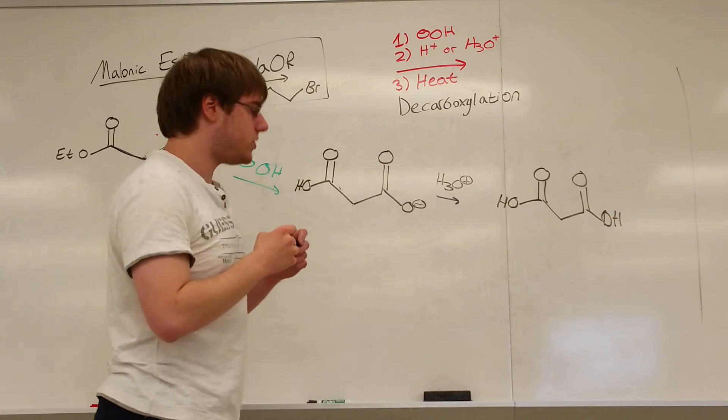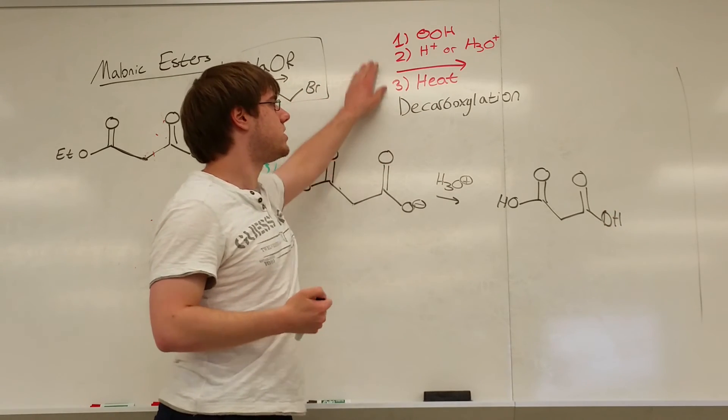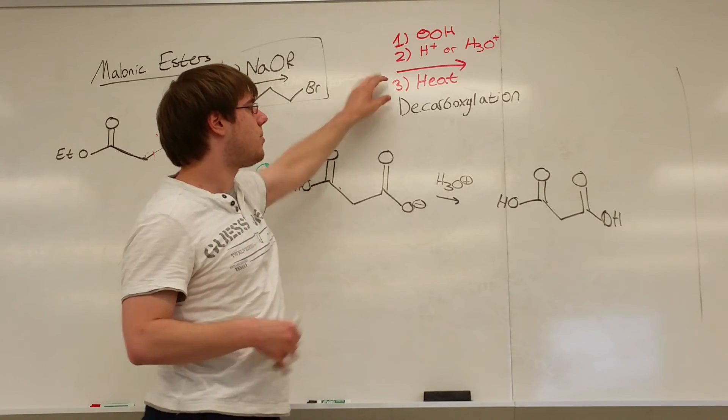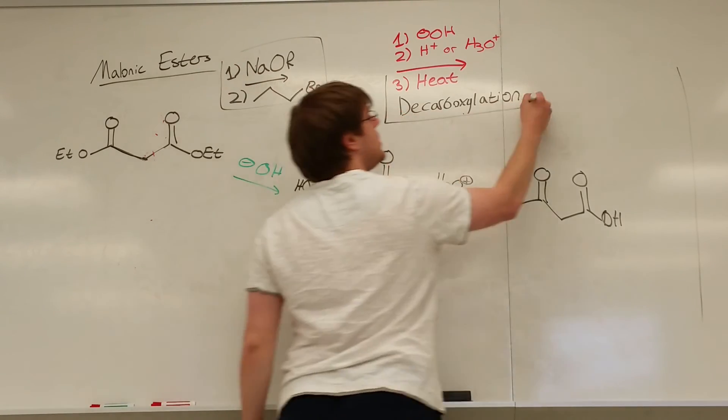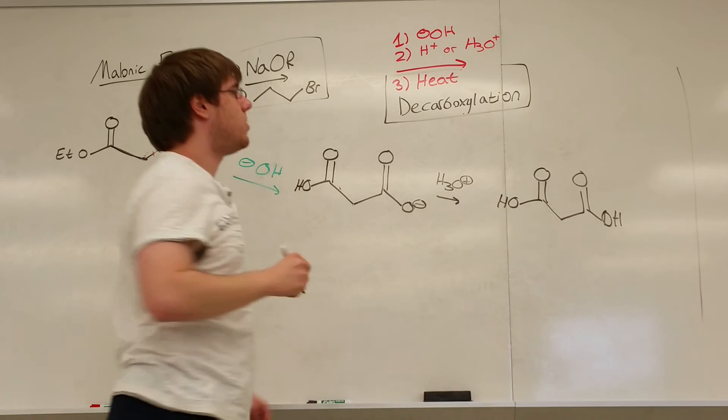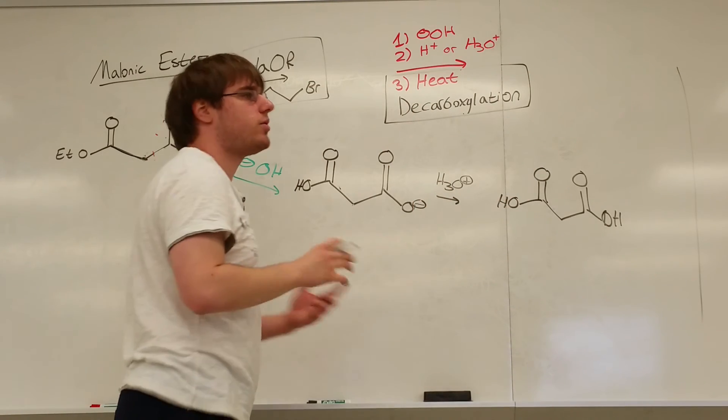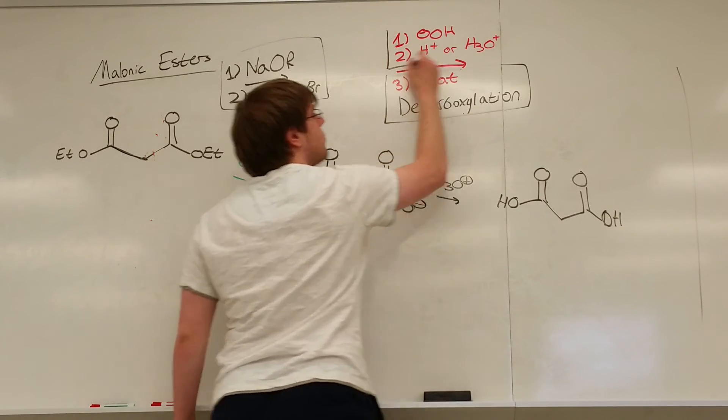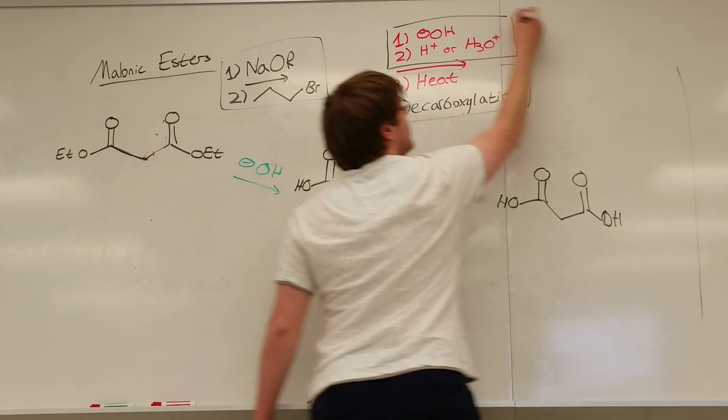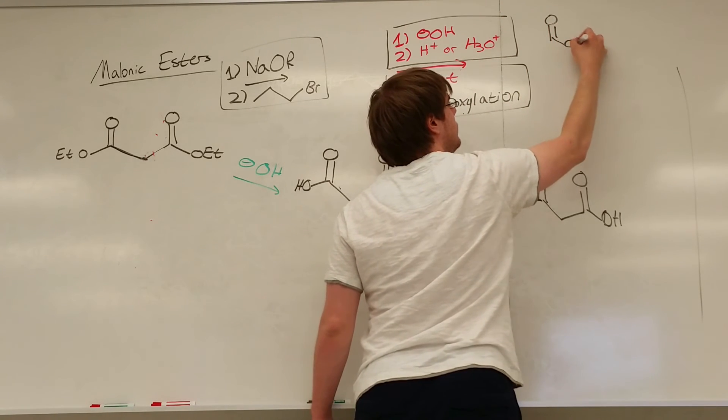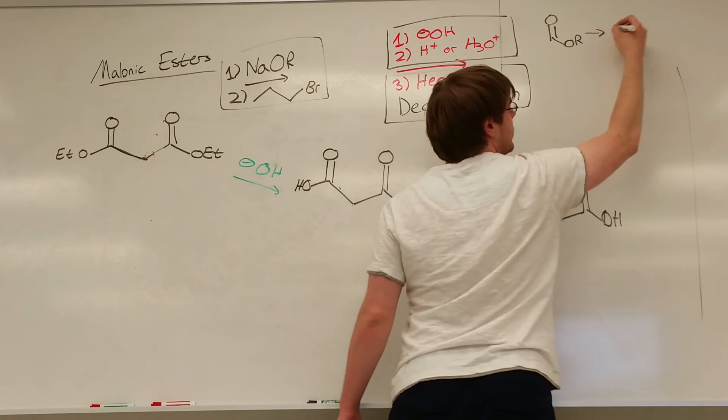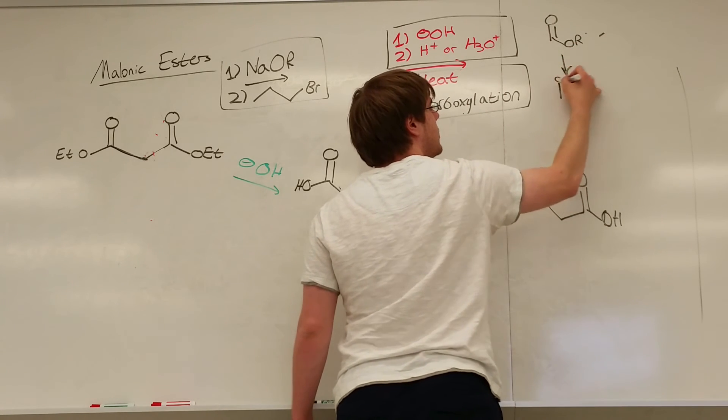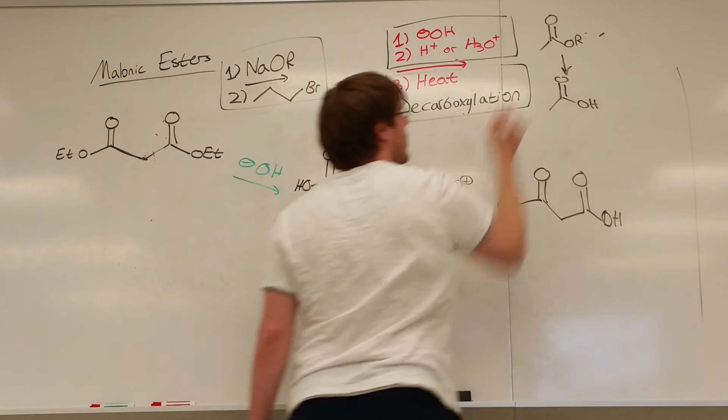So very commonly, people see these three reactions together and say, okay, this is all decarboxylation. No. The only step that does decarboxylation is heat. All you need is heat. But then there are some prior prerequisites you need to actually cut that carboxylic acid off. These two reactions, one and two, are used together to turn an ester into a carboxylic acid. So you turn an OR group into a carbonyl with an OH group.